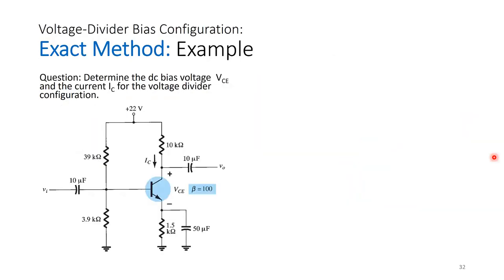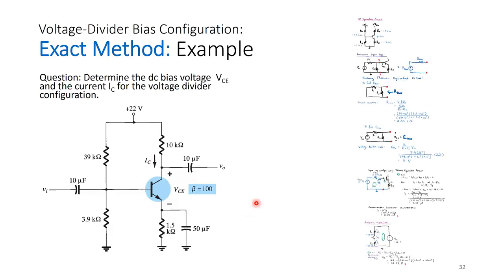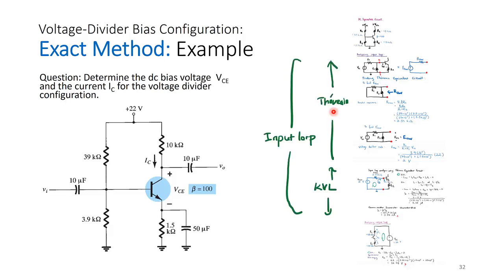For the exact method example, the circuit has R1 = 39 kΩ, R2 = 3.9 kΩ, RC = 10 kΩ, RE = 1.5 kΩ, VCC = 22 V, and beta = 100. We want to find the DC bias operating point: VCE and IC. The solution involves input loop analysis — finding the Thevenin equivalent circuit and performing KVL — followed by output loop KVL.